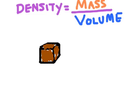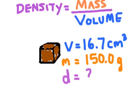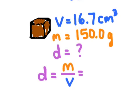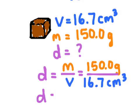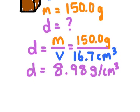Let's try calculating density based on some measured values. Remember our equation for density. If you had a cube of copper that had a volume of 16.7 cubic centimeters and a mass of 150 grams, what is its density? Using the equation, density equals mass divided by volume: 150 grams divided by 16.7 cubic centimeters gives a density of 8.98 grams per centimeter cubed. And that's our final answer.